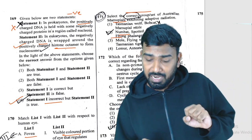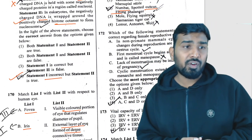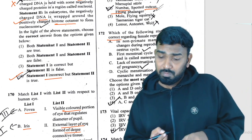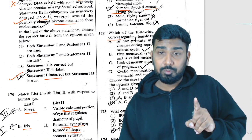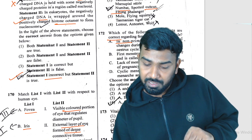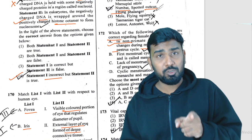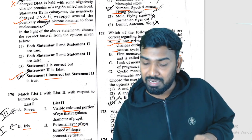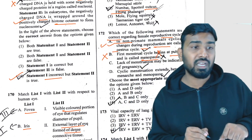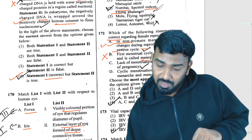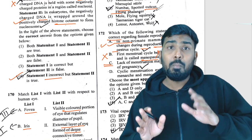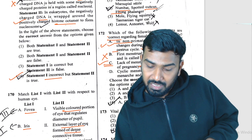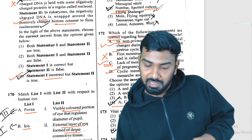Question 172: correct statements about the female cycle. In non-primate mammals the reproductive cycle is called the estrous cycle; in primates it is the menstrual cycle — correct. The first menstrual cycle begins at puberty (menarche, not menopause — that option is wrong). Lack of menstruation may indicate pregnancy — correct. Cyclic menstruation extends between menarche and menopause — correct. So options A, C, and D are correct.